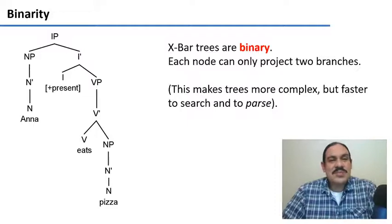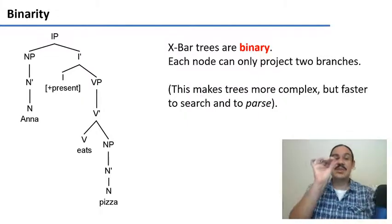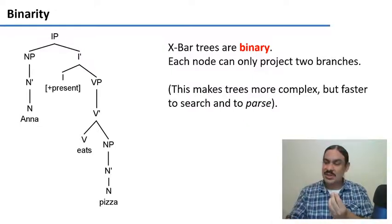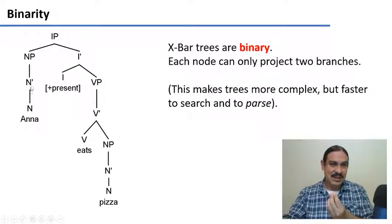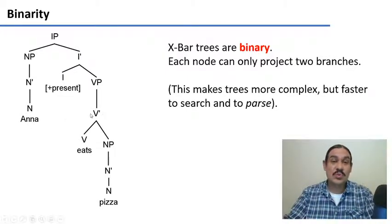A property of X-bar trees is binarity. You might have noticed that each of our nodes can project one branch, as in this NP that projects one, Anna, or it can project two branches. There's this V-bar that projects two branches, the head of the verb and the noun phrase.